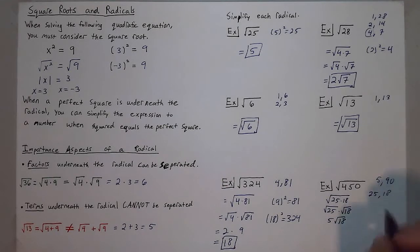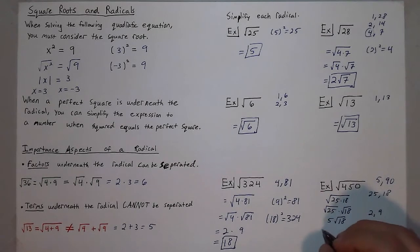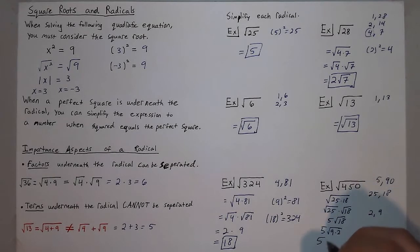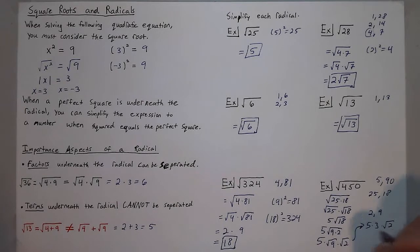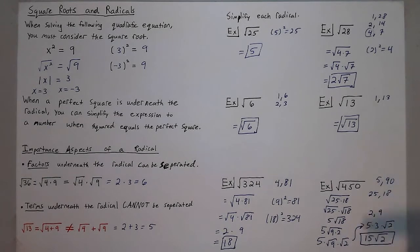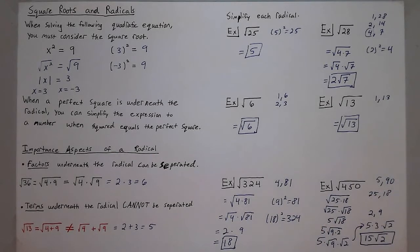But 18 can still be simplified — 18 = 2 times 9, and 9 is a perfect square. So I get 5 times square root of 9 times square root of 2, which is 5 times 3 times square root of 2, giving 15√2. Sometimes you can continue taking square roots and simplifying as you find smaller numbers. And those are square roots and radicals.